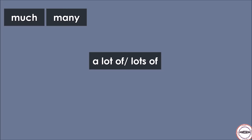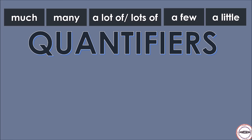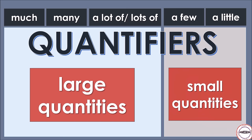Keep in mind: much, many, a lot of, a few, and a little are quantifiers. We use them before a noun to indicate the amount or quantity of something. Much, many, and a lot of express large quantities. A few and a little express small quantities.